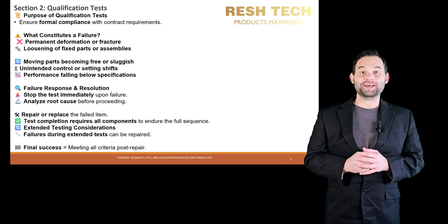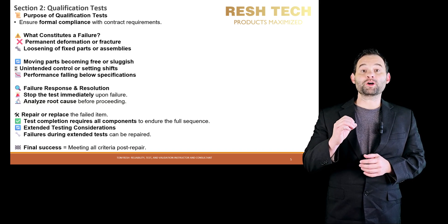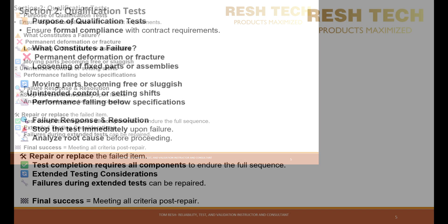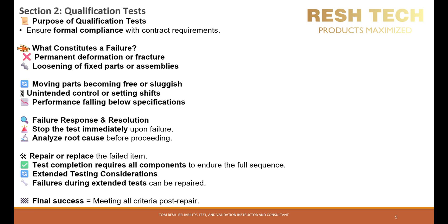Next, we will look at qualification tests. These tests are designed for formal compliance with contract requirements. When defining failure during qualification tests, the standard states that material is deemed to have failed if it suffers permanent deformation or fracture, any fixed part or assembly loosens, a moving part becomes free or sluggish, any control or setting shifts inappropriately, or if the performance fails to meet specifications under functional conditions. If a failure is observed, the test must be stopped immediately to analyze the root cause. The failed item should then be repaired or replaced, and the test is only considered complete when every component has successfully endured the complete test sequence.